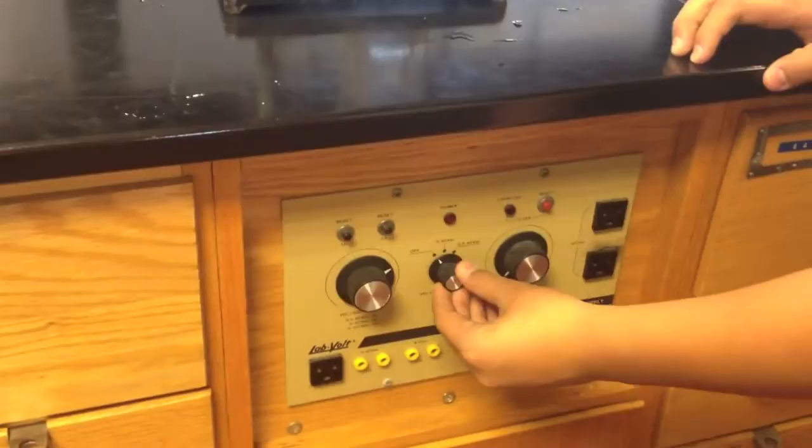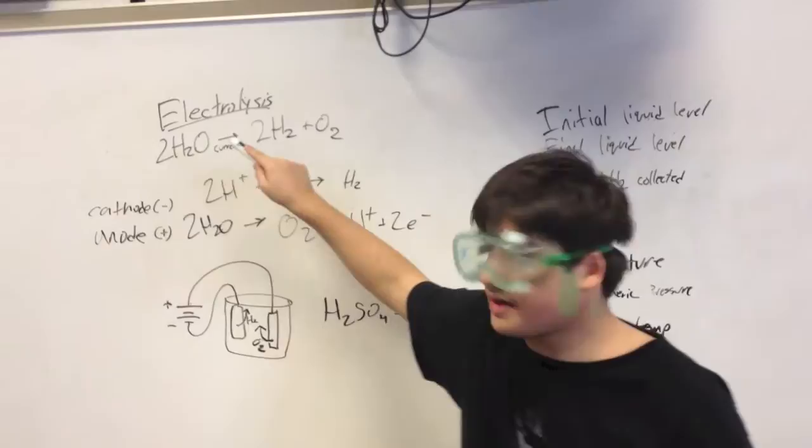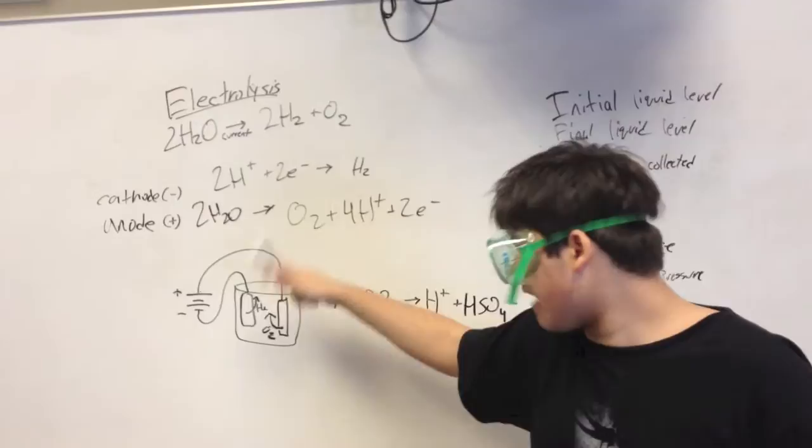In today's lab, we'll be using a process known as electrolysis to take water, run an electric current through it, and convert it into its two natural elements. This is the reaction that's going to occur at the cathode, seen here, which is negative in electrolysis.